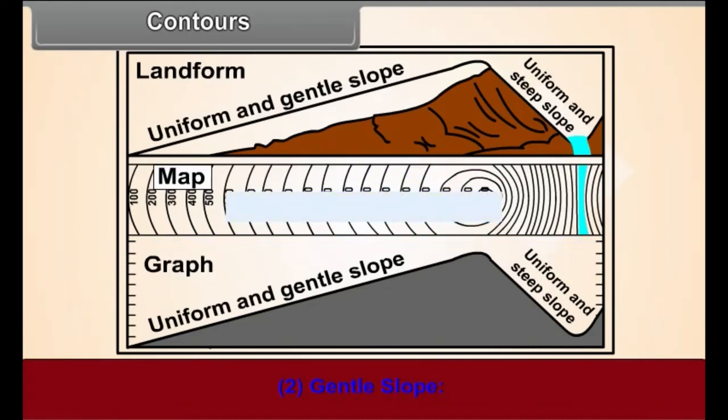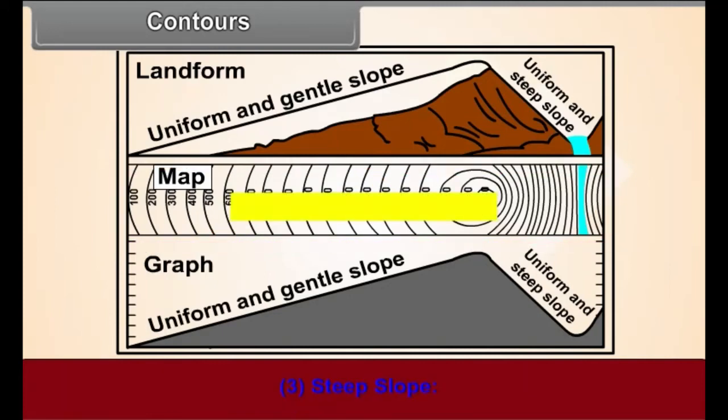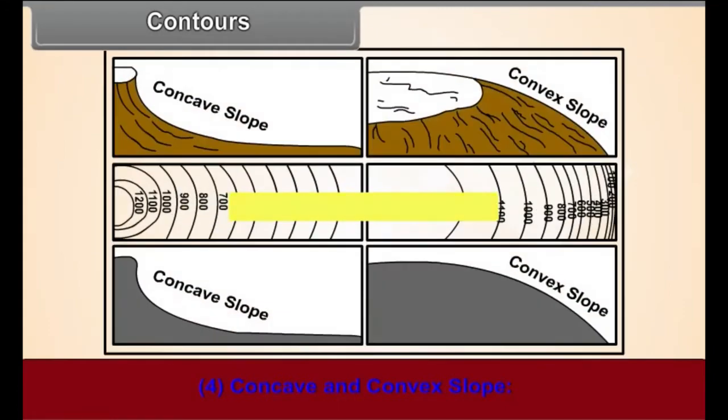2. Gentle slope. When the contour lines on a map are far away from one another, they indicate a gentle slope. 3. Steep slope. If the contour lines on a map are close to one another, the slope is steep.